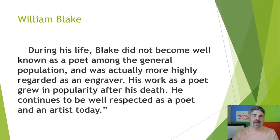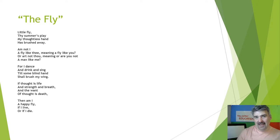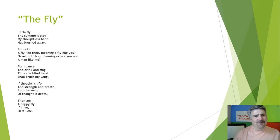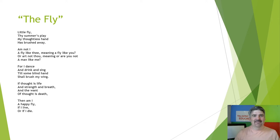Now that we have a solid understanding of Blake's life and work, let's take a brief look at one of his poems. This poem by Blake is called The Fly. We're only going to do an initial read right now as we'll take a deeper look at it later. Let's read the poem. The Fly. Little Fly, thy summer's play, my thoughtless hand has brushed away. Am not I a fly like thee — meaning a fly like you? Or art not thou — meaning, are you not a man like me? For I dance and drink and sing till some blind hand shall brush my wing. If thought is life and strength and breath, and the want of thought is death, then am I a happy fly if I live or if I die? This is a really unique poem that contains layers of meaning.